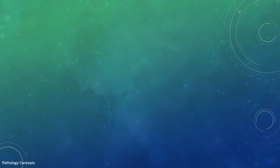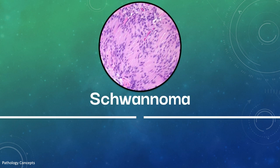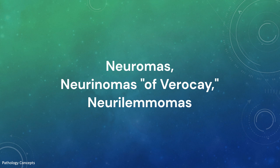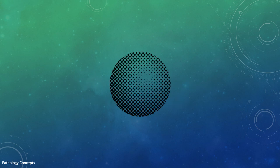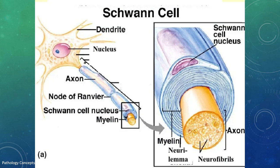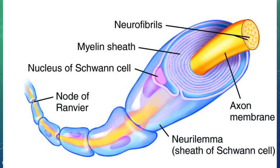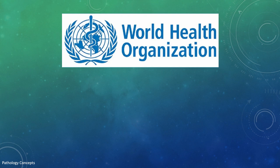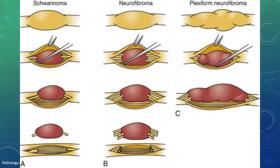Hello and welcome everyone. Today we are discussing schwannoma, also known as neuroma, neurinoma, or neurilemoma. They are benign, well-encapsulated, slow-growing nerve sheath tumors composed exclusively of Schwann cells. Schwann cells protect and support the nerve cells of the nervous system. The tumor can originate from any myelinated central or peripheral nerve with Schwann cells. The WHO classifies schwannoma as a grade 1 benign tumor.